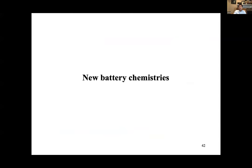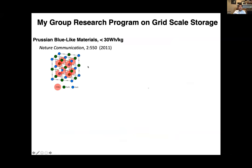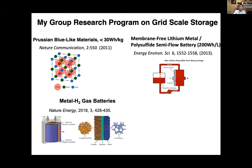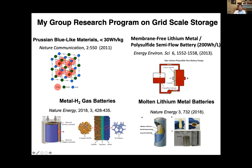With the remaining few minutes, let me mention new battery chemistries and new redox chemistry that continue to be exciting. Our co-chair Michael Aziz is working on redox flow batteries — very exciting chemistry for grid-scale storage. Over the years, my group also looked into Prussian blue-like materials with very fast kinetics, though the energy density is low. We also explored polysulfide semi-flow batteries — pretty exciting but very challenging. Most recently, let me highlight two new chemistries: metal-hydrogen gas batteries, and a molten lithium chemistry with a solid electrolyte in the middle.